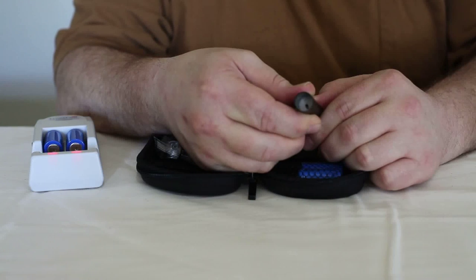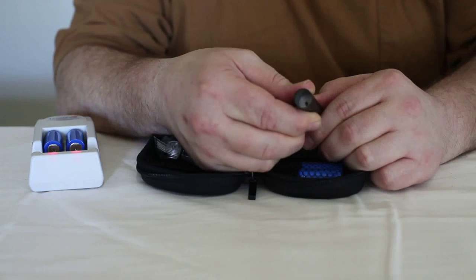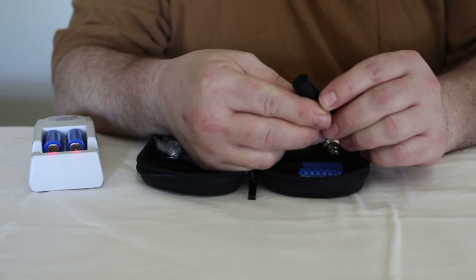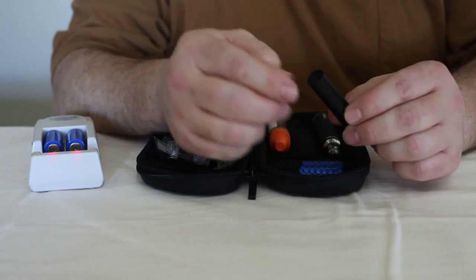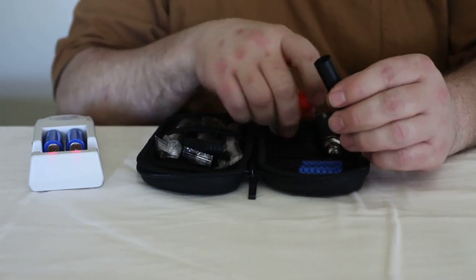Now inside the tube, you can see there's polyfill with a tube down the middle. What you're going to do is drip the liquid onto the polyfill without sending it down the center tube.